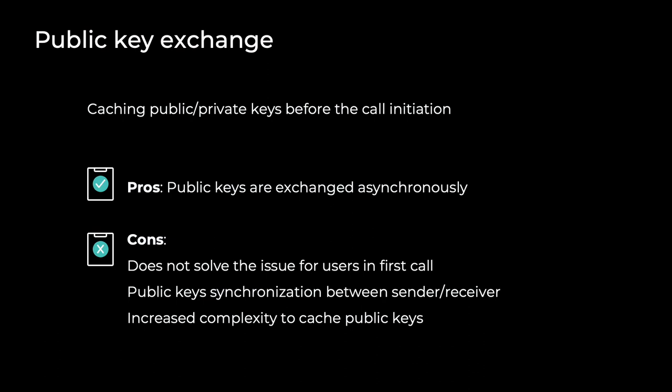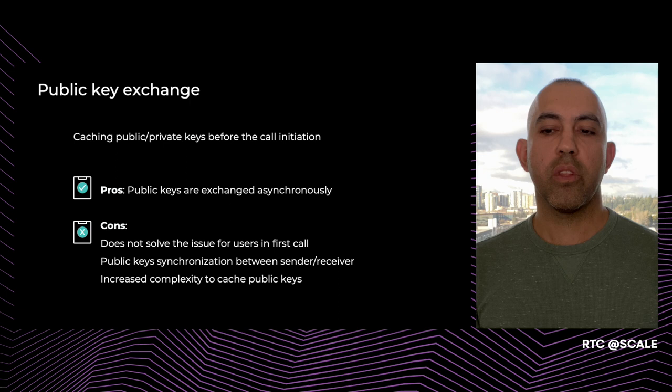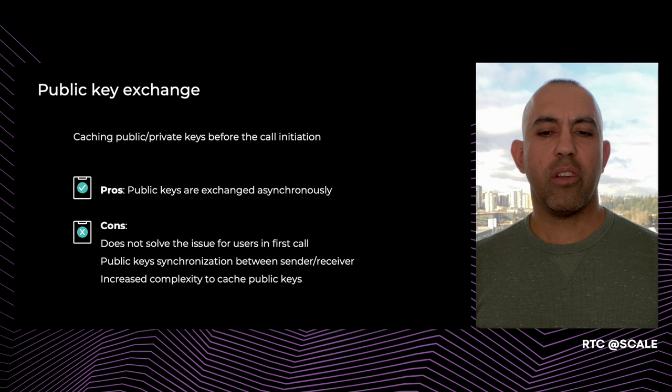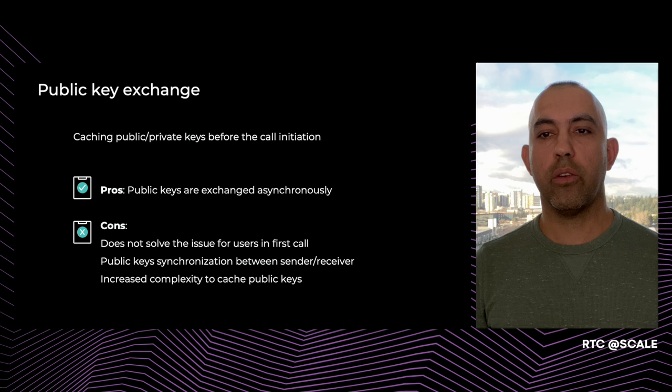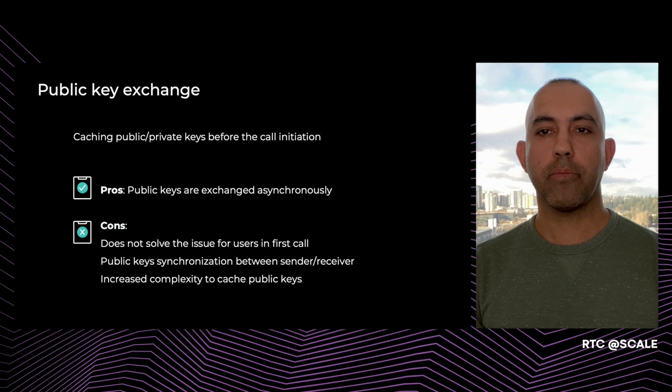A possible solution for the public key size issue is to negotiate public keys among participants ahead of time and cache them locally. The benefit is that public keys can be exchanged asynchronously and not block or affect connection latency or reliability. For scenarios where participants are calling each other for the first time, public key exchange is still required at call initiation. A downside is that we need to ensure senders and receivers are using the corresponding public-private keys, requiring a synchronization mechanism, which increases complexity.